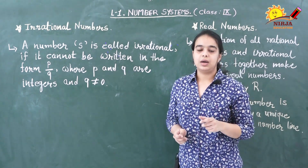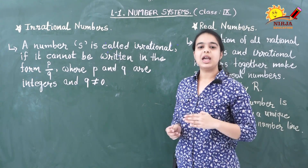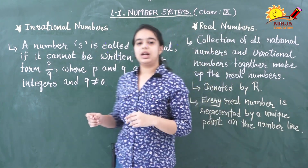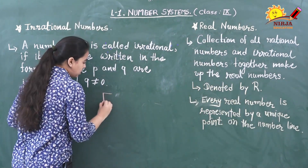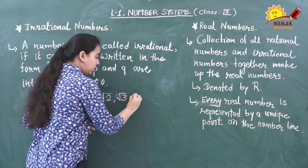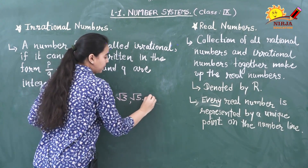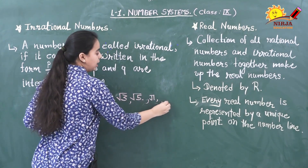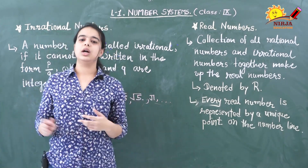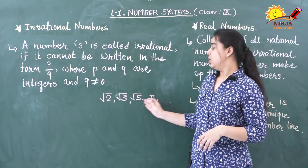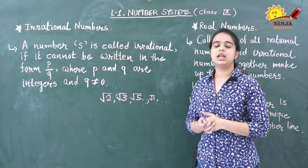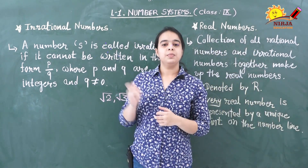What are the examples of irrational numbers? The examples of irrational numbers are √2, √3, √5, π, and so on. Now, what is the proof that √2, √3, √5, and π are all irrational? The proof for √2, √3, √5, and many more numbers being irrational shall be discussed in class 9.